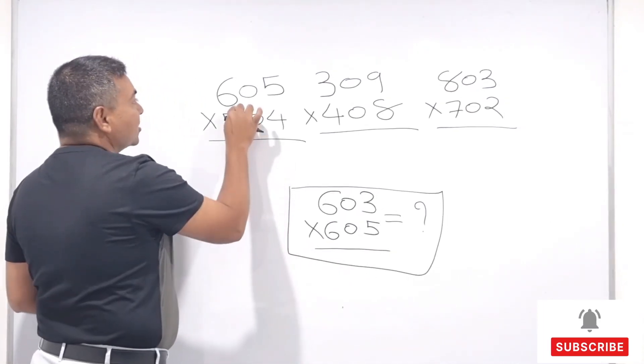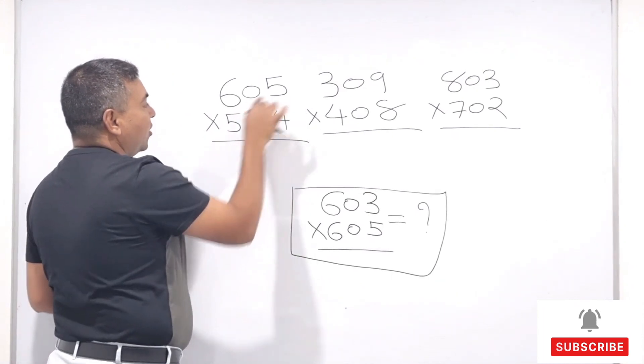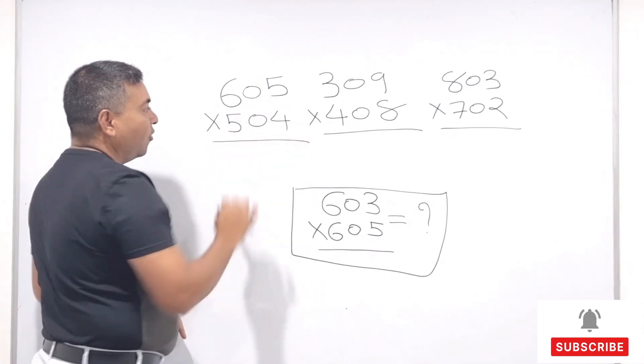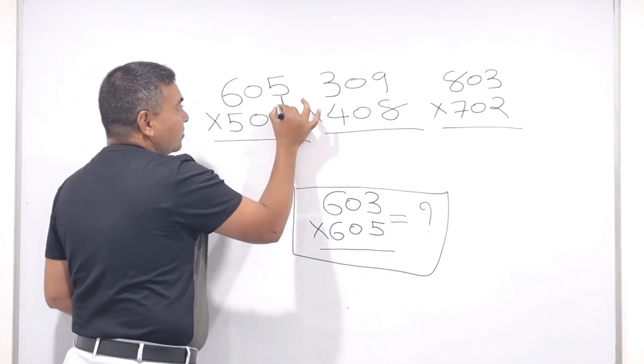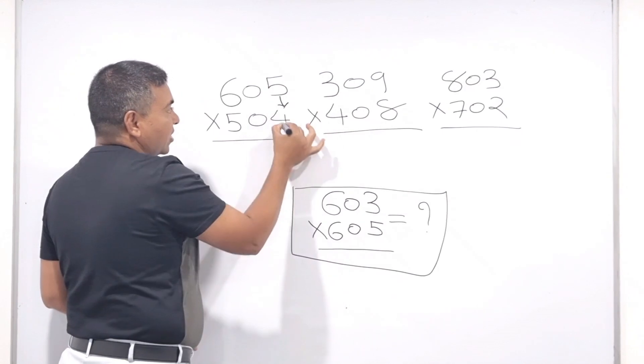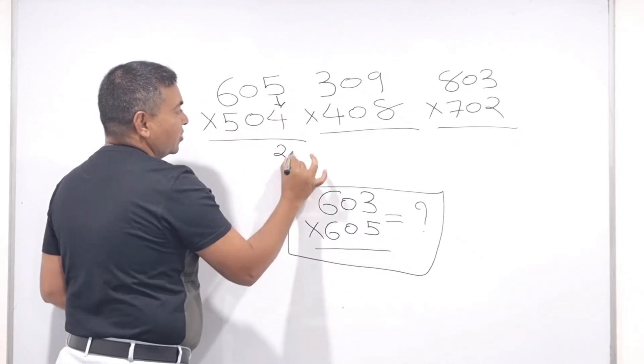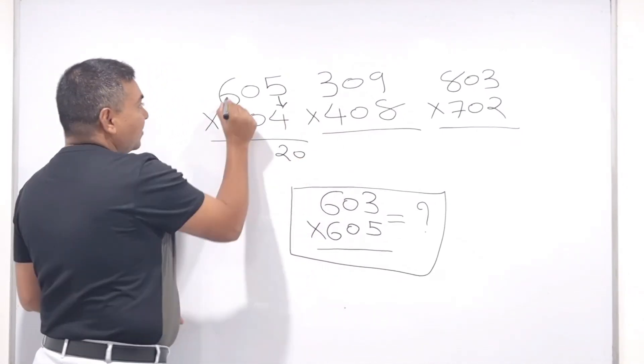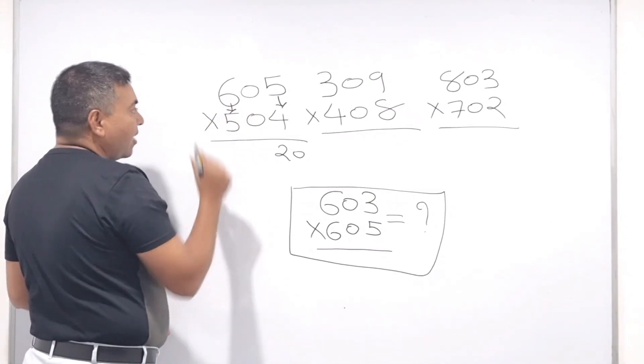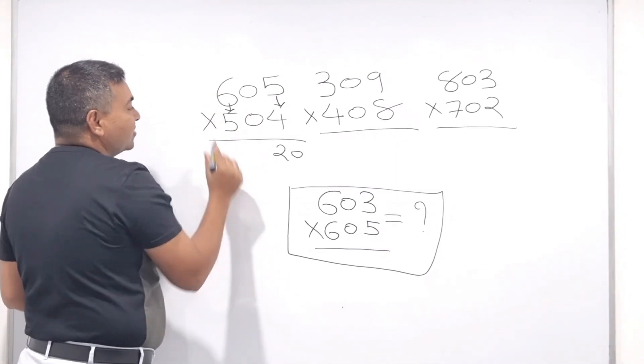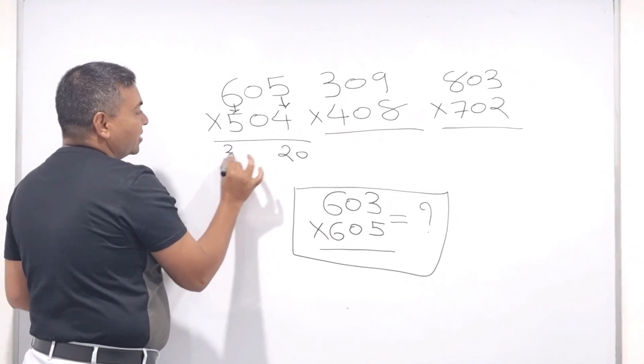So when I'm doing 605 multiply by 504 my very first step is very simple just 5 times 4. 5 times 4 is 20 so I'll just put down 20. Then my first digit 6 times 4... 6 and 5 I'll multiply 6 times 5 is 30 so I'll put down 30 here.